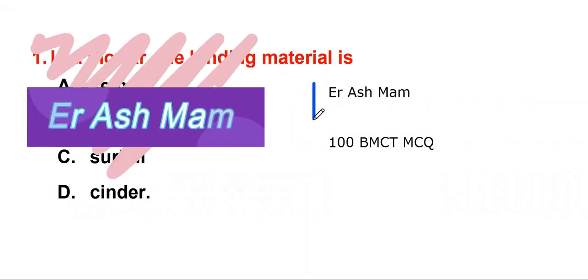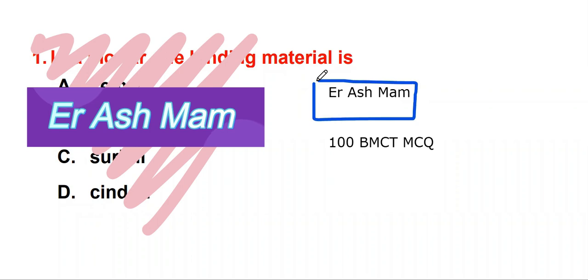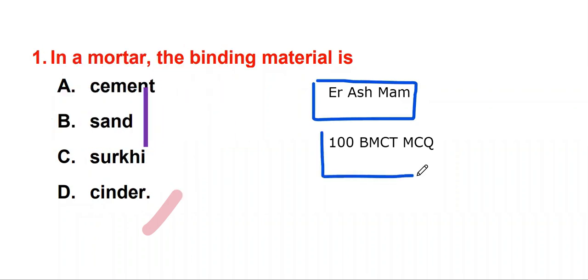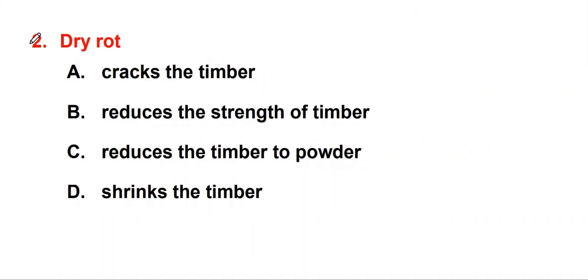Hello guys, welcome to my channel Engineer Ashmap. In this video we will see 100 BMCT MCQ rapid fire questions. Question number one: In mortar, the binding material is cement. We use cement as a binder material in mortar. Second, dry rot reduces the timber to powder. If it is timber, then dry rot reduces this timber to powder form.